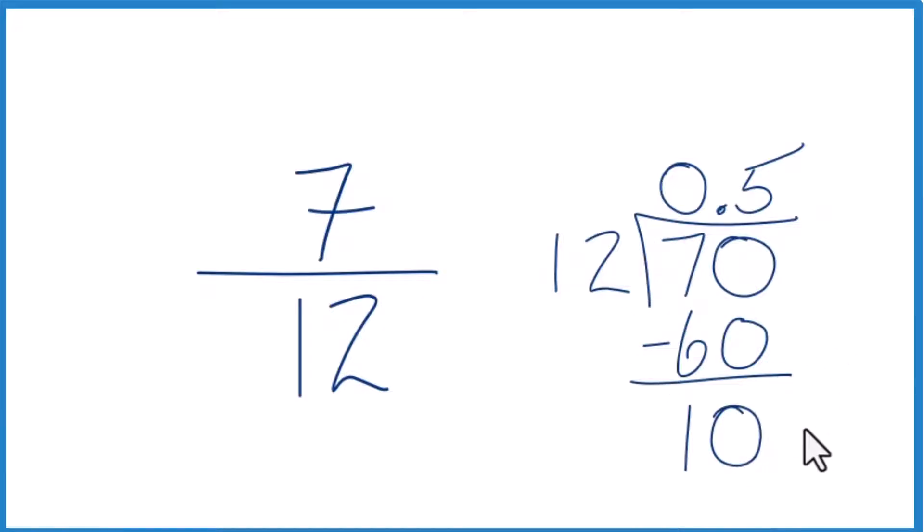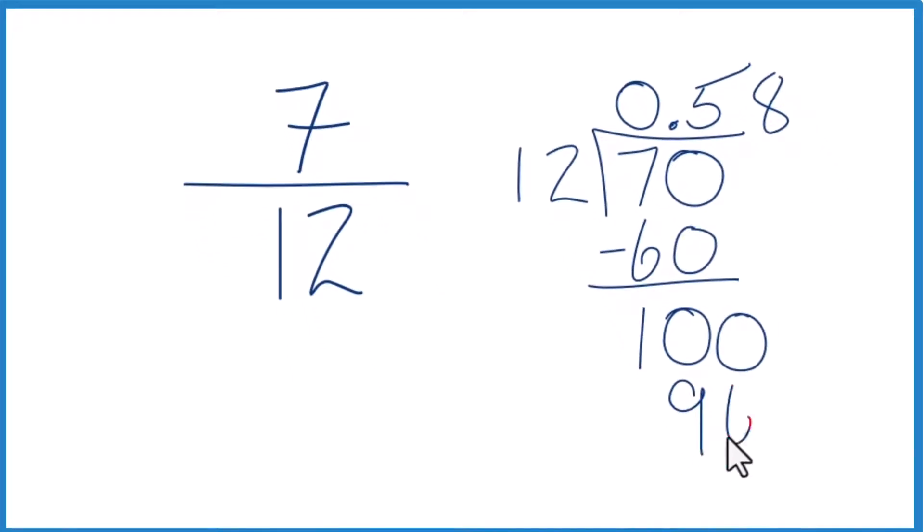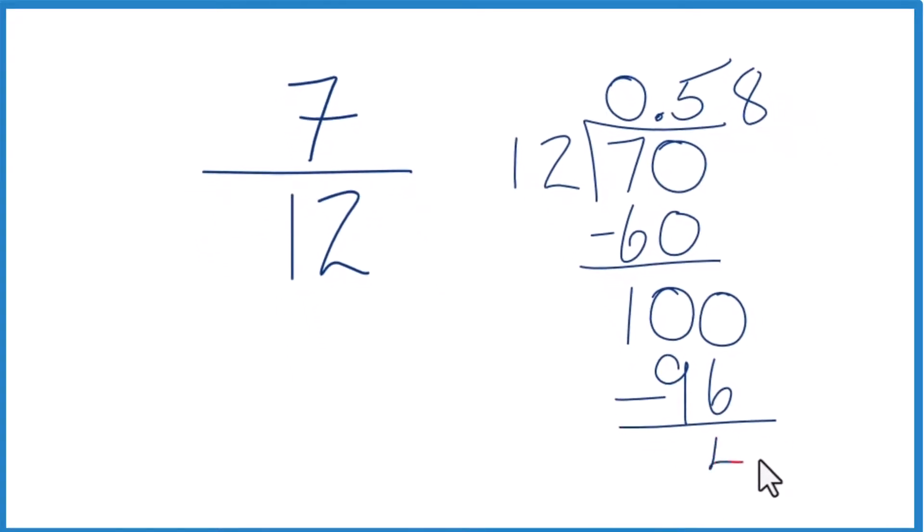12 doesn't go into 10, but we could call it 100 if we move over 1. So 8 times 12 is 96. We subtract and get 4.